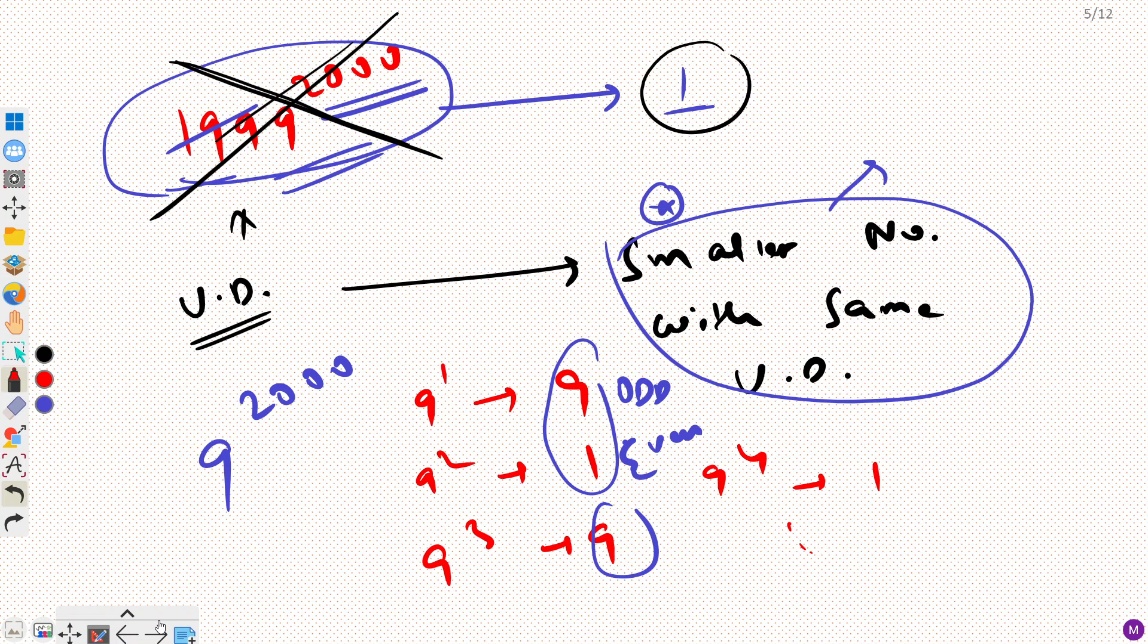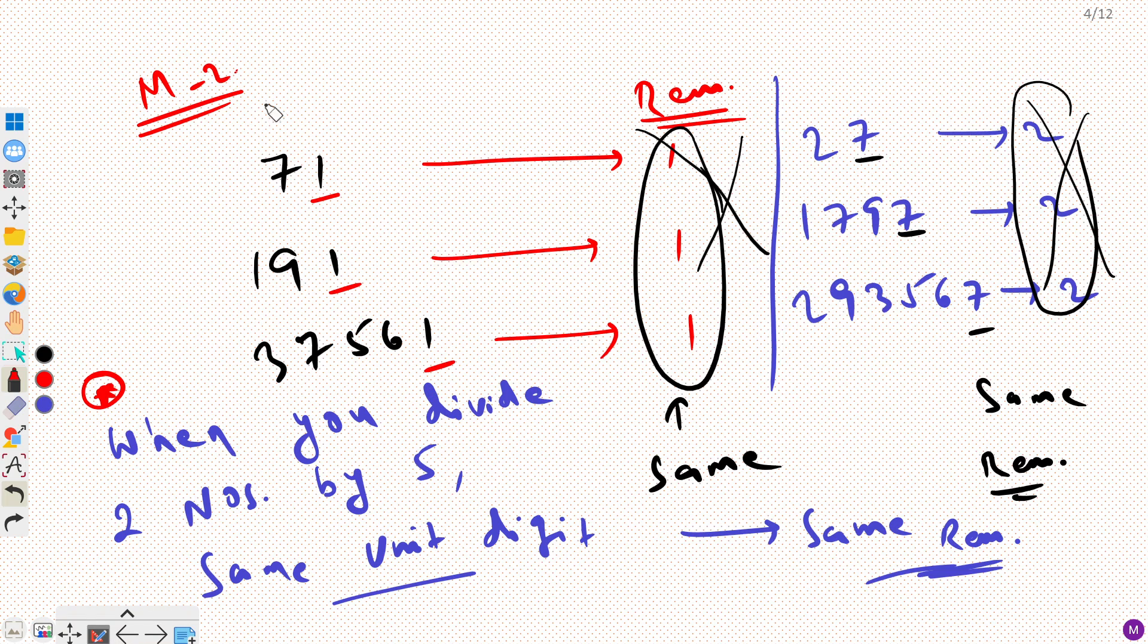So this was a very beautiful strategy for such questions. But please remember that this strategy works for 5 only. You don't apply for any another number. So I hope you understood both the methods. If you have any doubt you can always put it in comment section. Also if you know any better methods, then you can always put it in comment section. We can have a discussion there. It will be a good learning experience for all. Also you can subscribe to our channel. We upload 3 to 4 videos on Math Olympiad daily. So thank you.